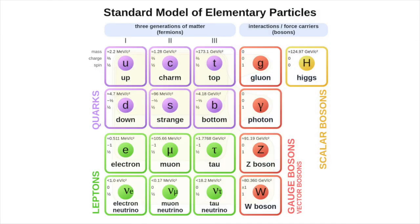Quarks are the only elementary particles in the standard model of particle physics that can experience all four fundamental forces: electromagnetism, gravitation, the strong force and the weak force. They're also the only known particles whose electric charges aren't integer multiples of the elementary charge. Up, charm and top quarks have an electric charge of plus two thirds, and down, strange and bottom quarks of minus one third, in units where the charge of the proton is one.